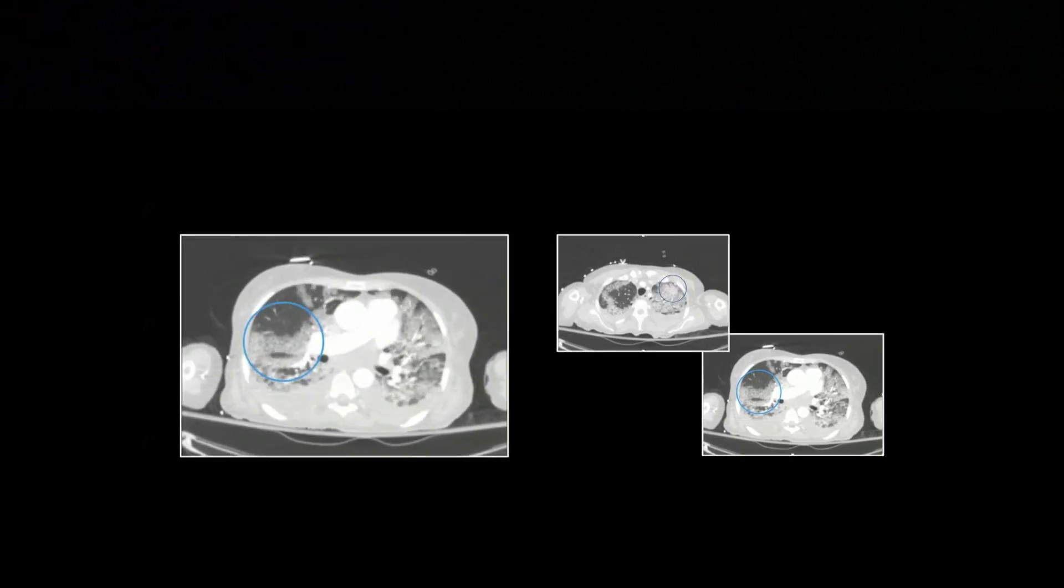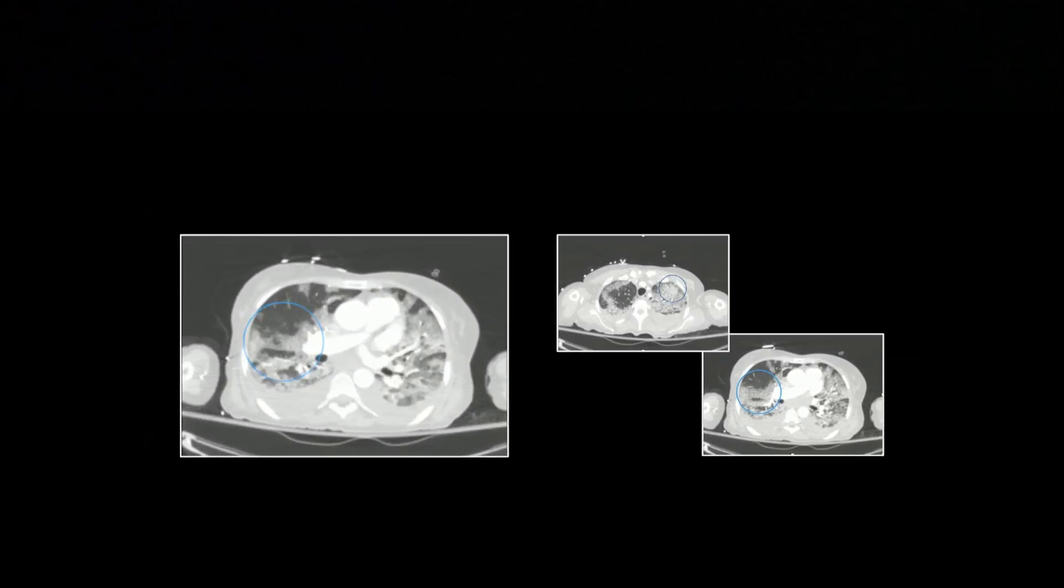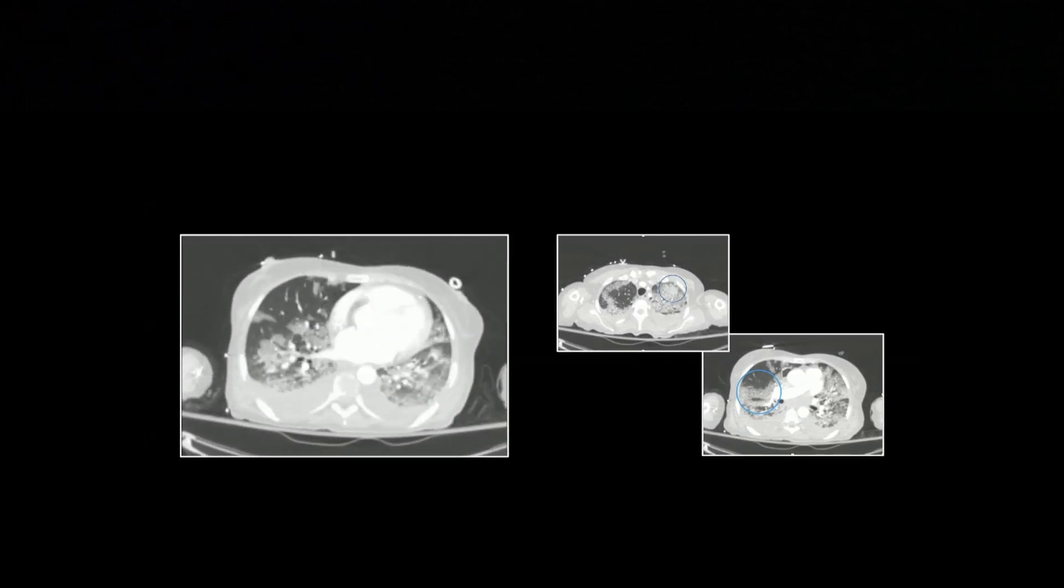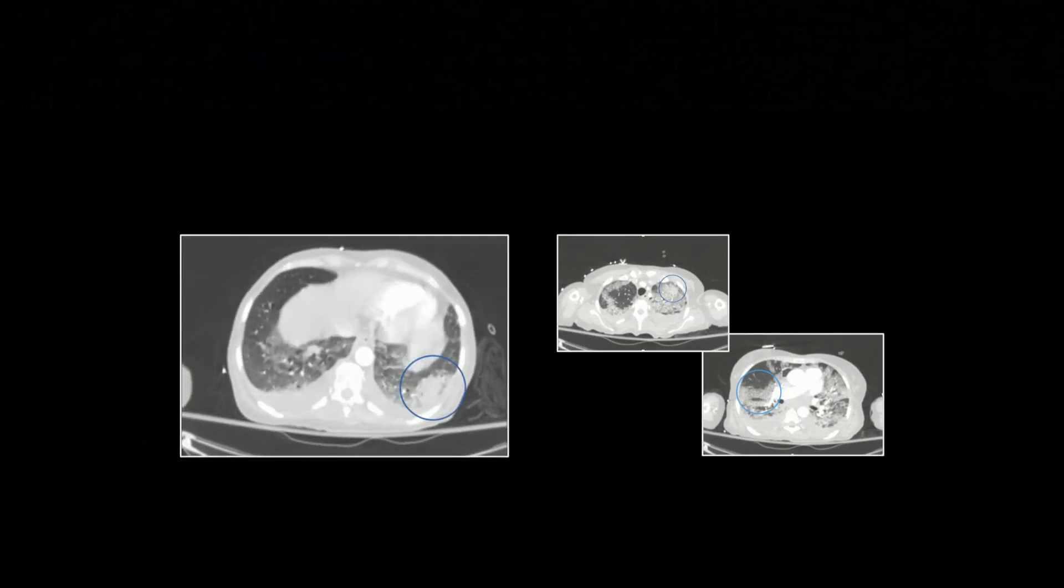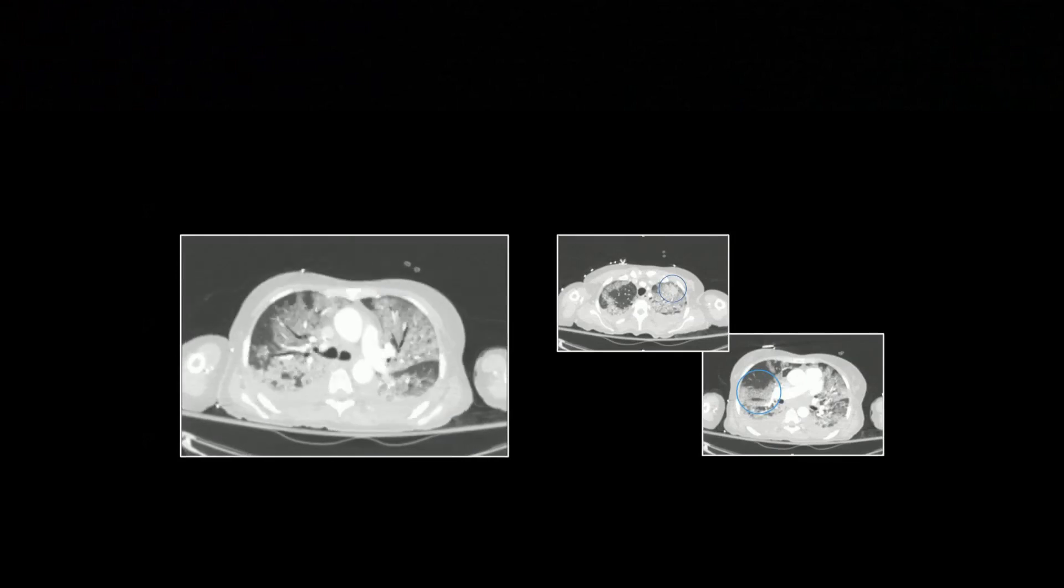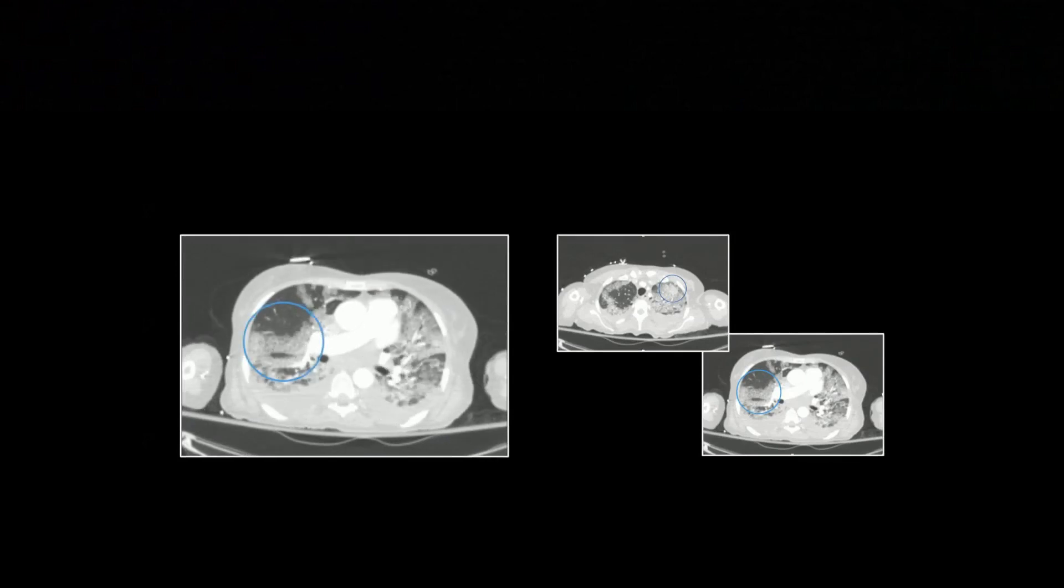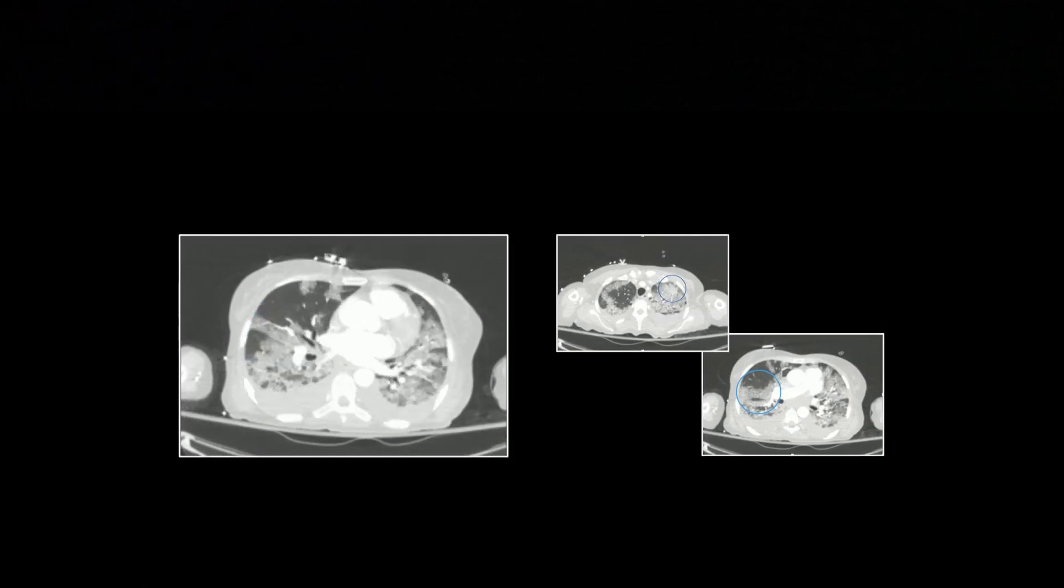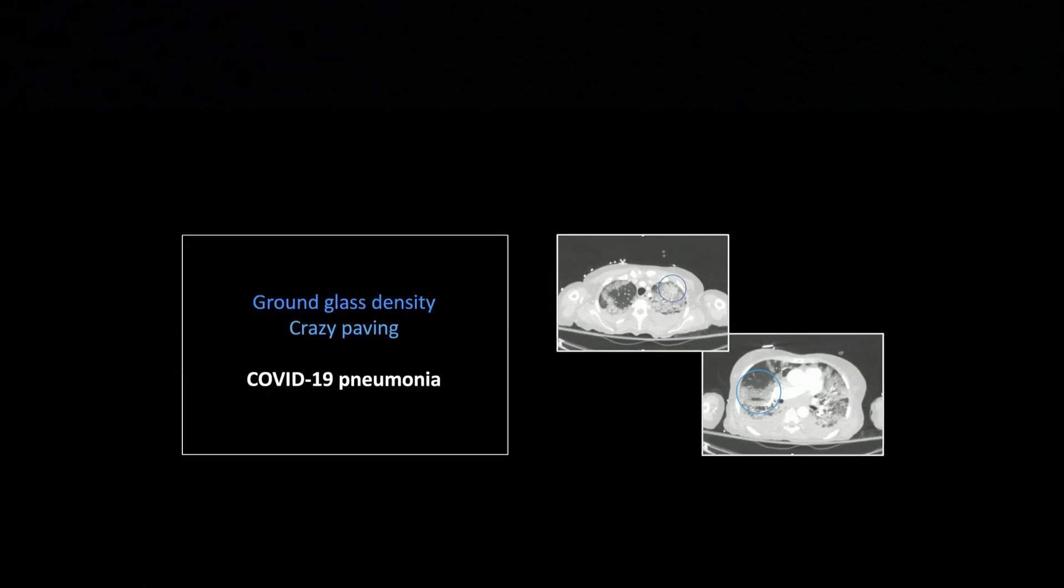Right in there is that frank consolidation within an area of ground glass. One of my old attendings used to say ground glass was like looking at someone in the shower through that frosted glass. You can tell there's someone in there, but you can't see the detail. That's kind of what it's like. You can see the vessels and other structures running through, but it's a little fuzzy because of the parenchymal density. That's another case of COVID-19.